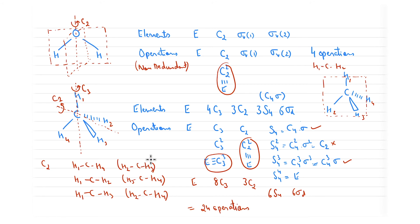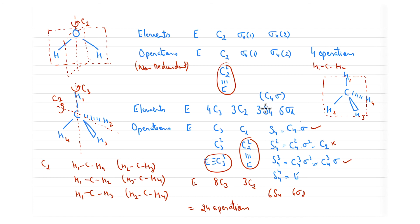By now we should be able to identify where a symmetry element is located and how many operations it generates. This comes only with practice, so work through a large number of molecules. You need to locate symmetry elements on the molecule, generate the operations, and identify how many symmetry operations there are total. Let us now look at one or two more examples — BF3.